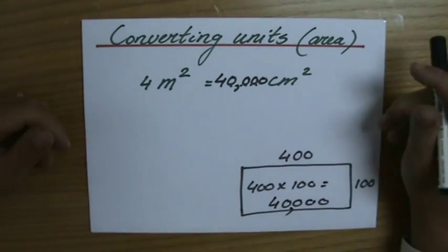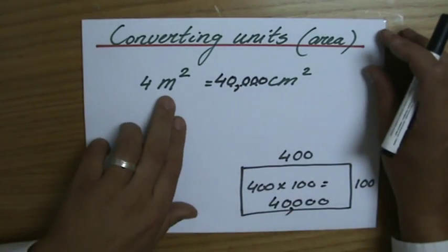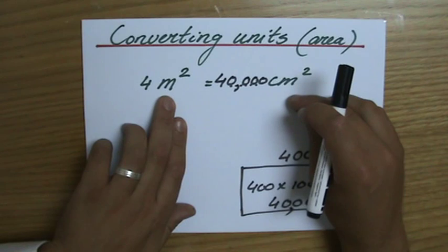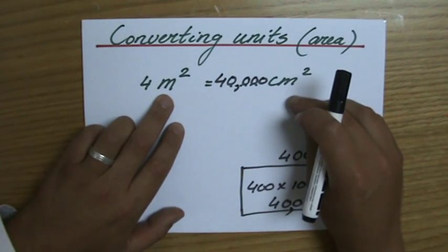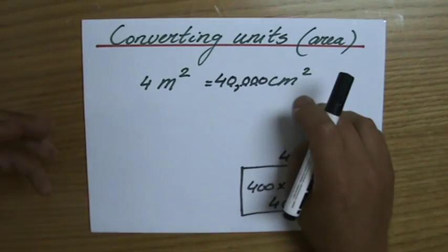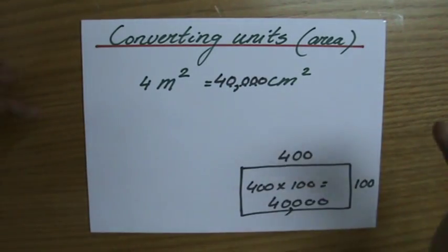And again, the book or many books will tell you, if you go from square meters to square centimeters, you've got to multiply it by 10,000. Yeah, that is correct, but it is very confusing because...